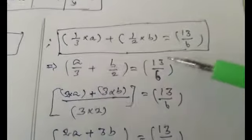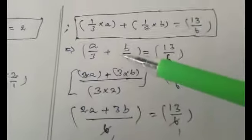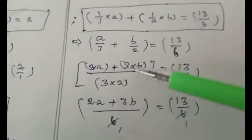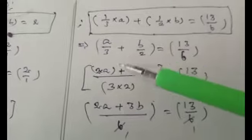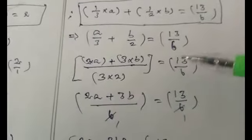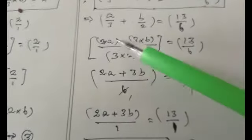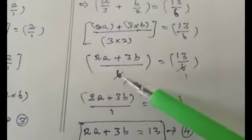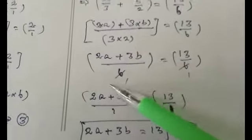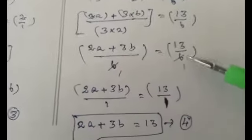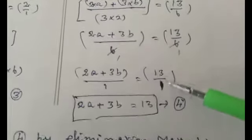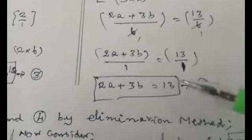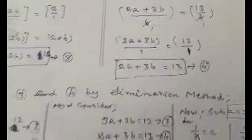Similarly for equation 2: a/3 + b/2 = 13/6. Taking LCM on the left-hand side gives (2a + 3b)/6 = 13/6. We can cancel the denominator 6 on both sides, so 2a + 3b = 13. Make it equation number 4.